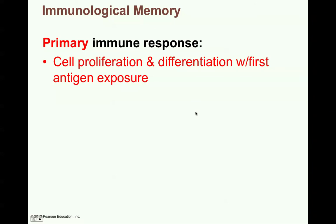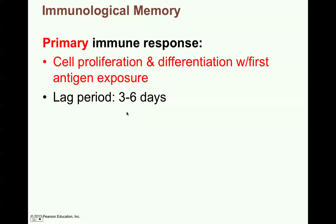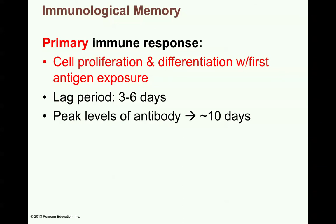This is talking about immune responses and immunological memory. When you encounter something the first time, it's called the primary immune response. When you encounter a pathogen for the first time, this leads to cell proliferation and differentiation with that very first antigen exposure. There's a lag period of about 3 to 6 days. Theoretically, someone could die before their body has had a chance to produce enough antibody to neutralize the pathogen. The peak levels of antibody are about 10 days, so you can be sick for quite a while before your body develops peak antibody levels.